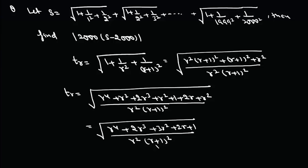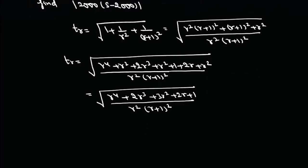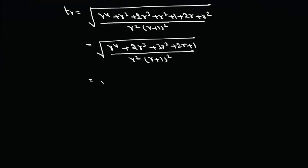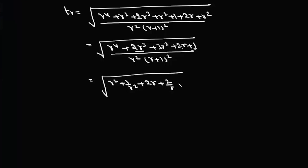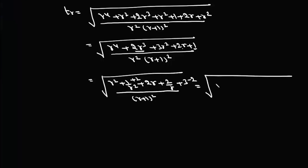Dividing everything appropriately, we can rewrite the numerator as r² + 2r² + 2r + 1, and recognize this expression. Adding and subtracting 2, we can write this under the square root as (r + 1/r)² + 2·(r + 1/r) + 1.